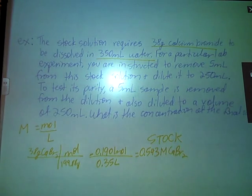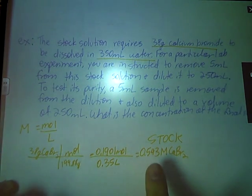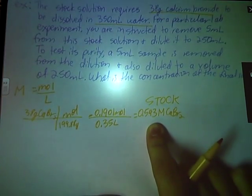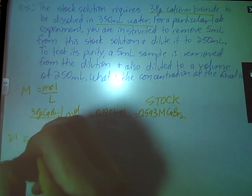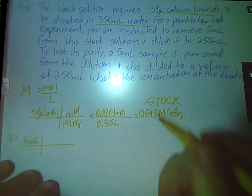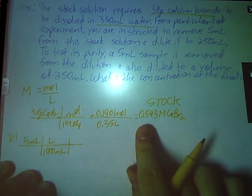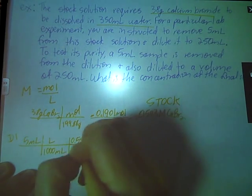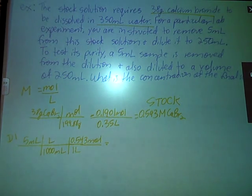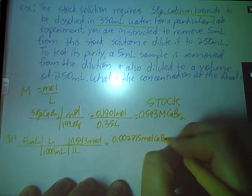If I take out 5 milliliters from this stock solution, let's figure out just how many moles am I taking with me. So we'll call this D1, dilution 1. 5 milliliters out of that original stock solution. Well, already discussed milliliters, not good enough. So let's convert to liters there. Let's go from liters to moles. Okay, we're taking it out of this solution here. All right, so 5 times 0.543 divided by 1,000, 0.002715 moles of calcium bromide. That's how many moles I'm taking with me.